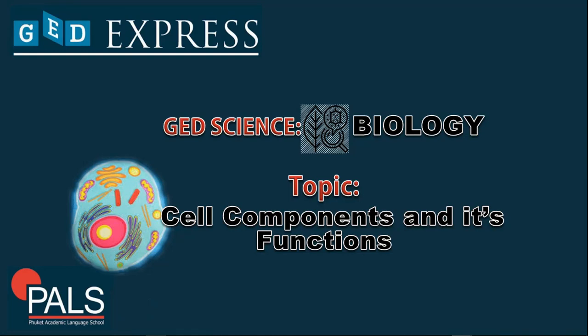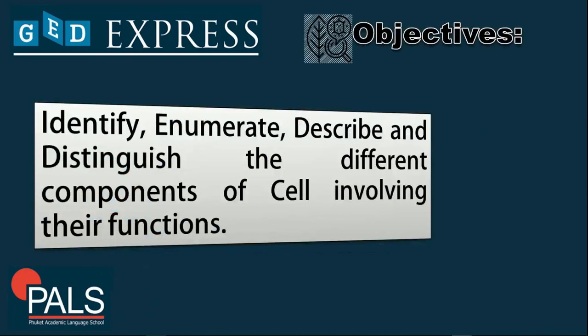During our previous topic, we talked about the characteristics of living things, but we're going to focus now on the cell alone, including the organelles which compose it. At the end of the discussion, every one of you is expected to identify, enumerate, describe, and distinguish the different components of a cell involving their function.